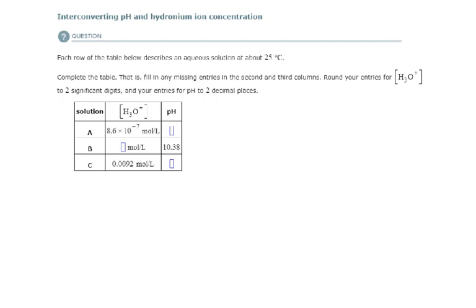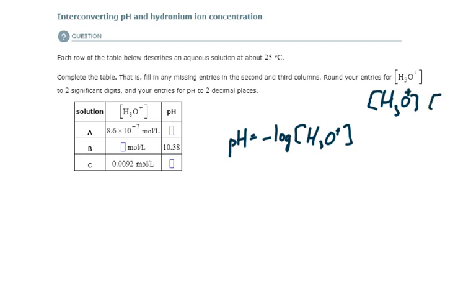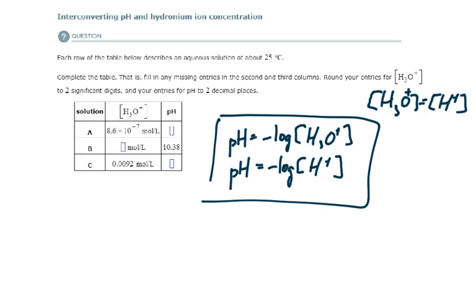What is the pH of a solution? pH is defined as the negative log of the hydronium ion concentration. Remember that H3O+ and H+ are used interchangeably, so you can also see the formula written as the negative log of the H+ concentration. This equation is designed to give us convenient numbers to work with. The reason it's the negative log is because it gives us a positive pH that would otherwise be negative due to the very small hydronium ion concentration.